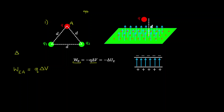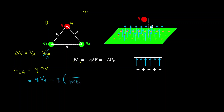The change in potential is simply the potential at the final point minus the potential at the initial point. Recall that at infinity we took our reference potential as zero. Therefore this is equal to Q times VA, and we can now calculate the potential at A and multiply by Q — that's simply equal to 1 over 4π times the permittivity constant.